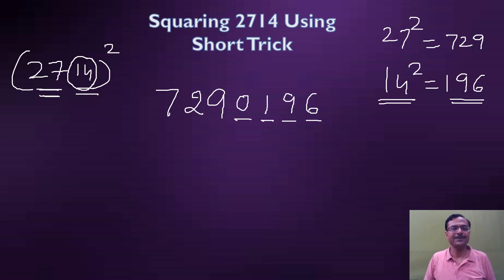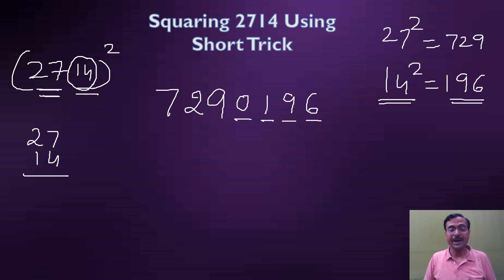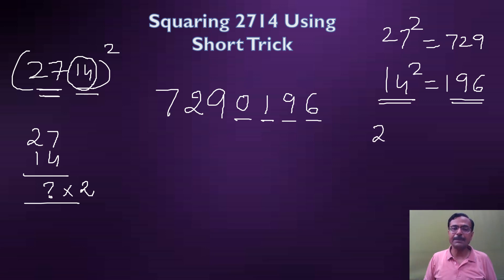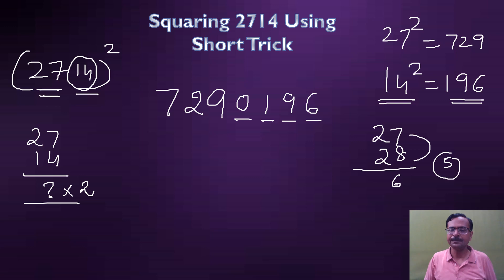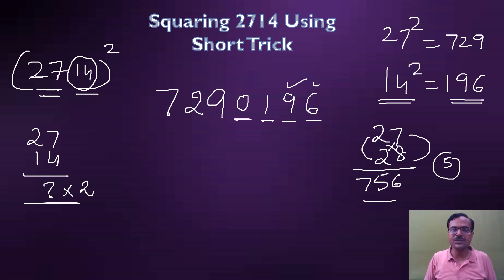The second thing: multiply the two numbers 27 and 14, then double the result. Instead of multiplying by 14 and then doubling, I multiply by 28 directly. Using vertical and crosswise: 8×7 = 56, carry 5; that gives 16+14 = 30, so 35 — carry 3; then 4+3 = 7. So 27×28 = 756. Leave two digits from the right of 0196 and write 756 there.